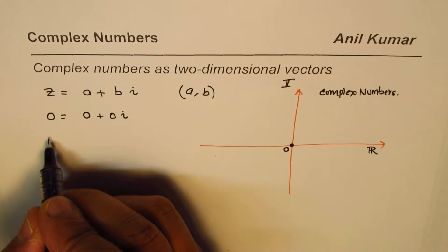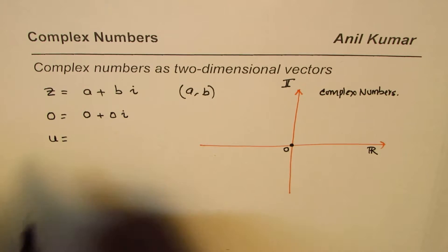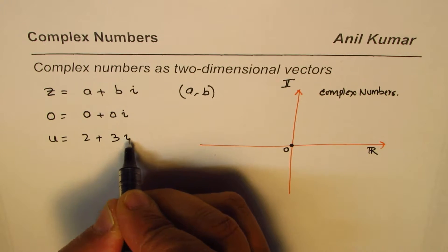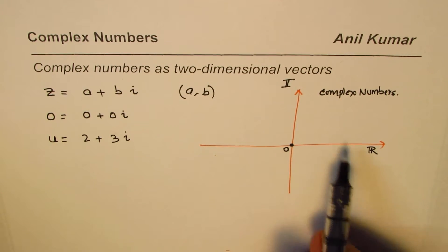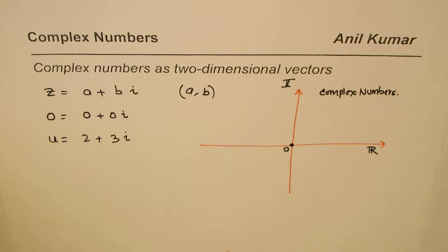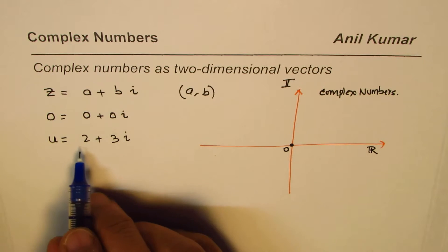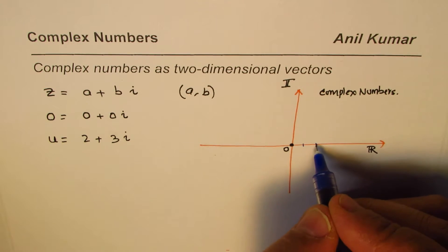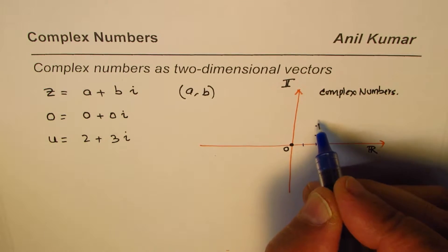And let me take some examples. Let's say u, and let me write any number. Let's say 2 plus 3i. To represent this on the plane of complex numbers, it will be two towards the real side, one, two, and three on the imaginary side. So one, two, three.